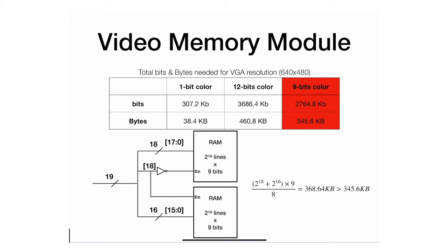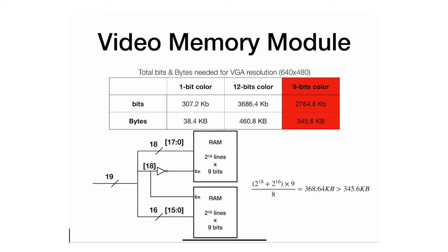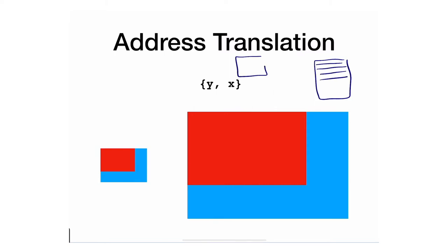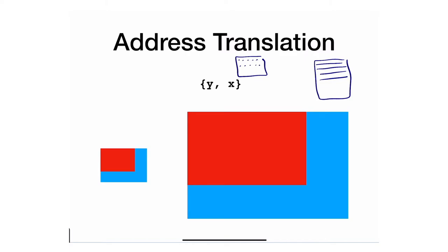Now let's talk about address translation. To access a certain pixel, we know that the RAM module contains lines where each line is exactly one pixel. Originally we have a frame with a bunch of pixels that get mapped using the row-major method — you take y, multiply by the horizontal size, then add x to get the address. A more efficient approach to avoid multiplication is to use concatenation, but concatenation only works if the x and y dimensions are multiples of two.